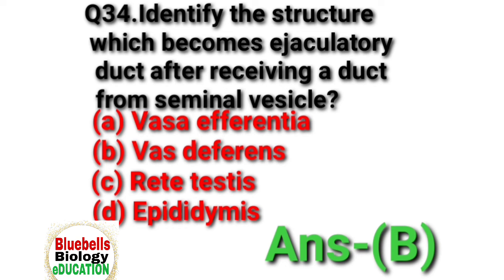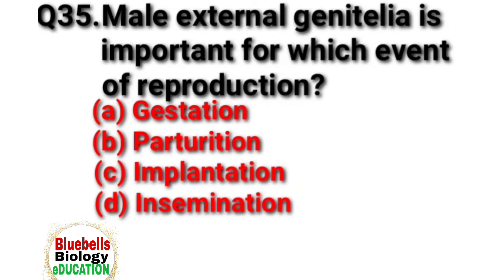Answer is B. Question 35. Male external genitalia is important for which event of reproduction? Options: